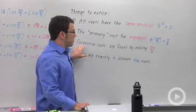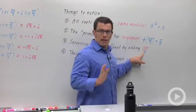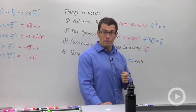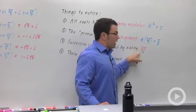Successive roots are found by adding 2 pi divided by whatever the index of the root is. In this case, the fourth root. So we divide 2 pi by 4. If we were taking fifth roots, we would add 2 pi over 5.